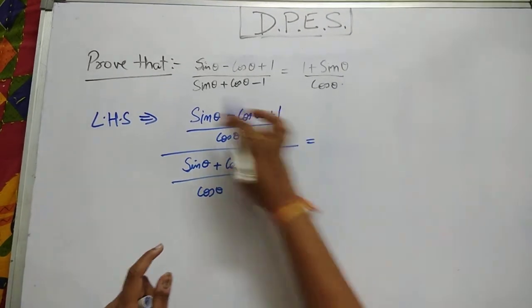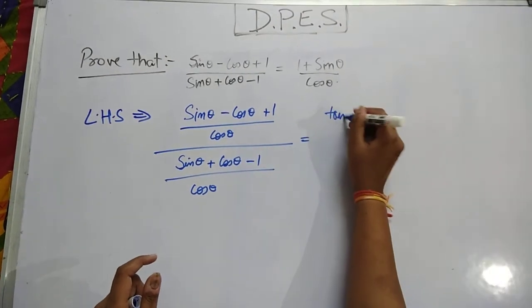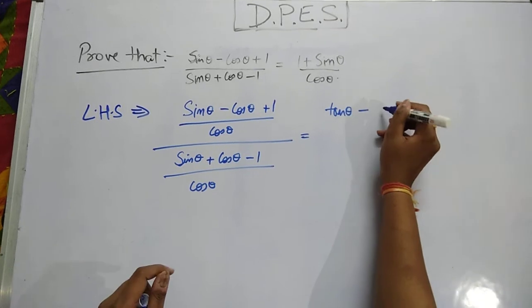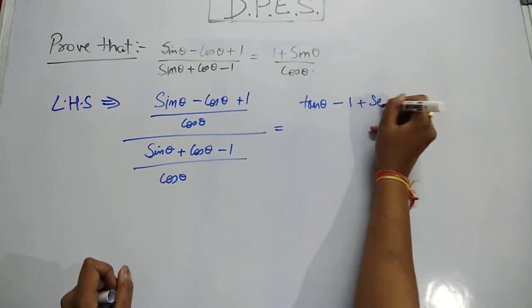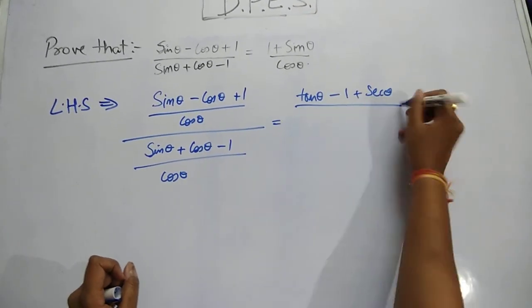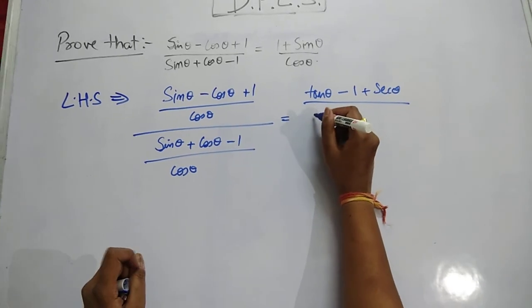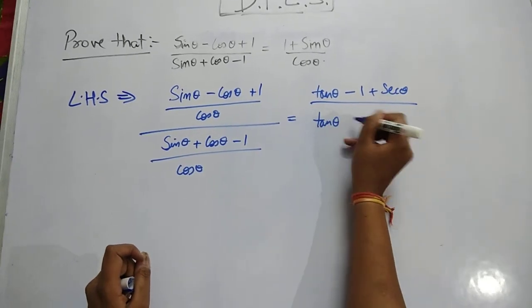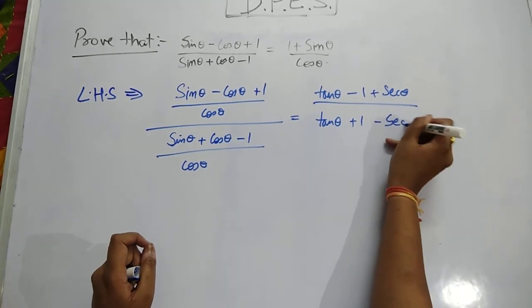This equals sin upon cos that is tan theta minus cos upon cos that is 1 and 1 upon cos that is sec theta. Then the denominator becomes sin theta upon cos theta is tan theta plus 1 minus sec theta.